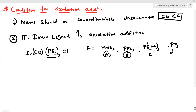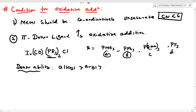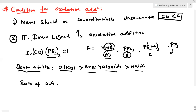I discussed the donor ability of phosphines already in the fifth video. The donor ability order is: alkyl group (highest donor ability) > aryl/phenyl group > alkoxide (OR group). The rate of oxidative addition follows this same donor ability order.